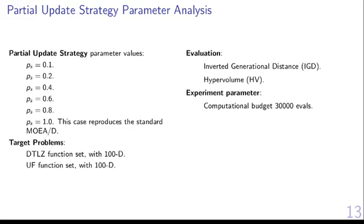We evaluate these six parameter values on the UF and DTLZ benchmarks, common benchmarks in the literature, using the hypervolume and IGD metrics, which are standard metrics in the literature. In this study, we set the maximum number of evaluations to 30,000 evaluations.